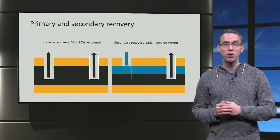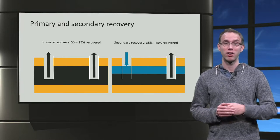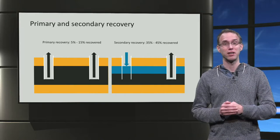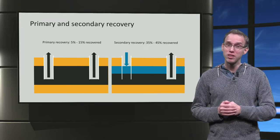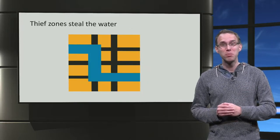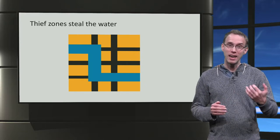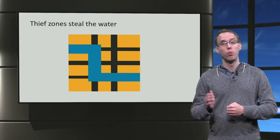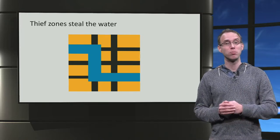We are looking at oil recovery. 60% of the oil remains trapped in the reservoir after secondary recovery. This is partly due to so-called thief zones. These are hyperpermeable zones that steal most of the water that is meant to produce oil. Instead of producing oil, water flows mainly via the thief zones directly to the producer well.